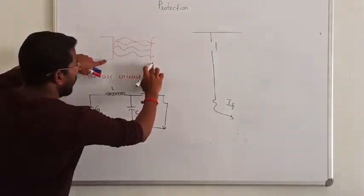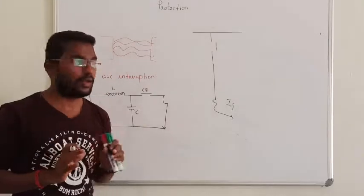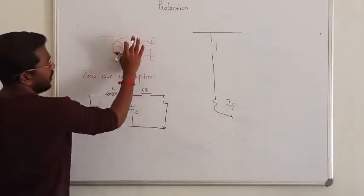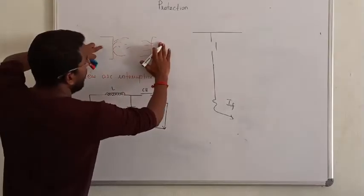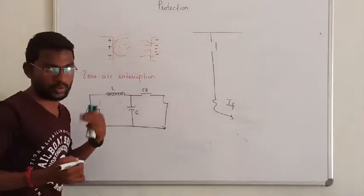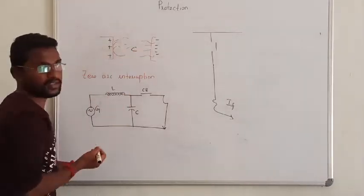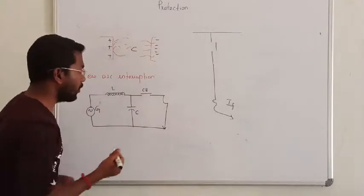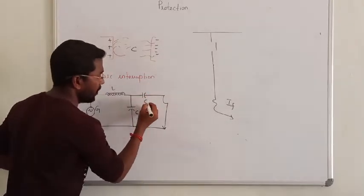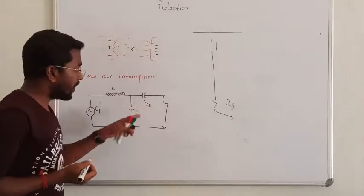Usually, when the contacts are open — if the contacts are open, whether positive or negative — there will be a formation of capacitance between the contacts. If the circuit breaker contacts are separated, it will act as a capacitor. This is the circuit breaker's capacitance.